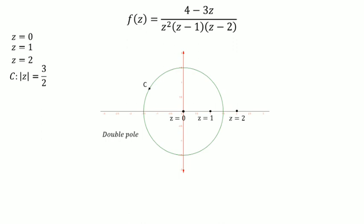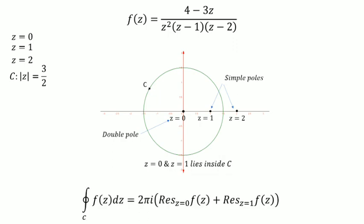z equals 0 is a double pole and z equals 1 is a simple pole; both lie inside our contour C. Therefore, the integral over C of f(z) dz equals 2πi times the residue of f(z) at z equals 0 plus the residue of f(z) at z equals 1.